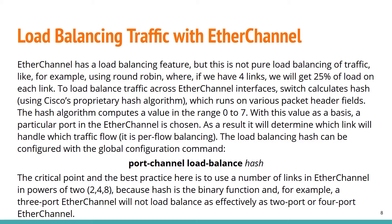As a result, it determines which link will handle which traffic flow — this is per-flow balancing. The load balancing hash can be configured with the global configuration command 'port-channel load-balance' and then a hash value. The best practice is to use a number of links in the EtherChannel in powers of two — for example 2, 4, 8 — because the hash is a binary function, and a three-port EtherChannel will not load balance as effectively as a two-port or four-port EtherChannel.